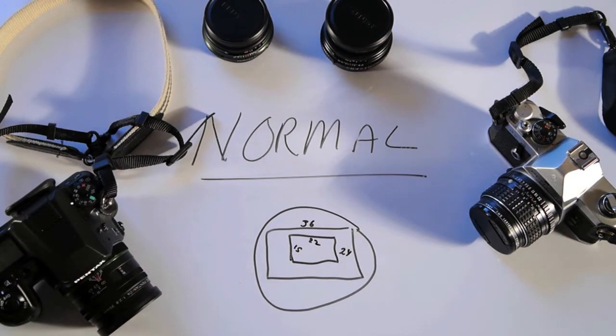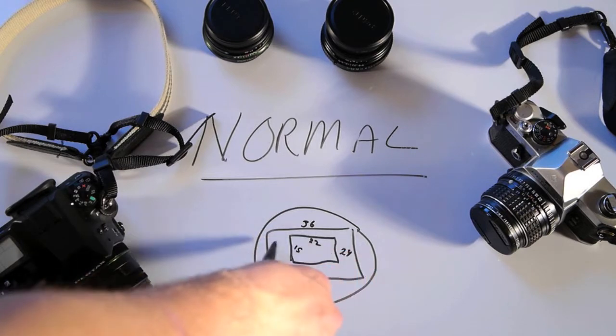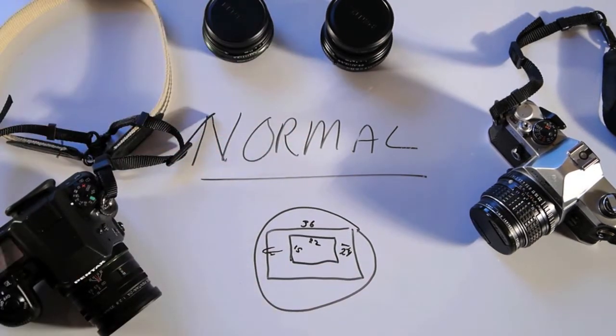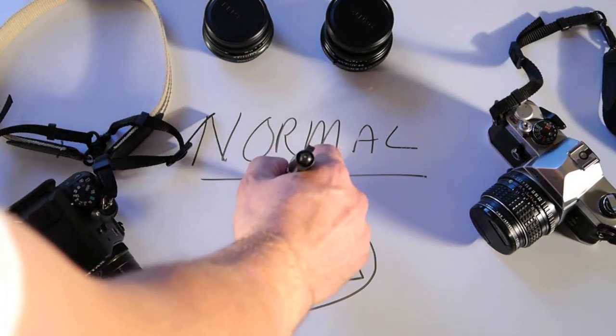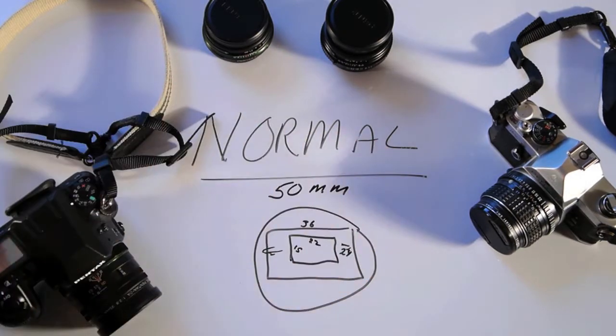Okay, so, all of a sudden, instead of getting the wide view, you're losing all of this, right? So, your 50mm lens now has become a 35mm. Okay? So, back in the film days, a normal lens was 50mm.